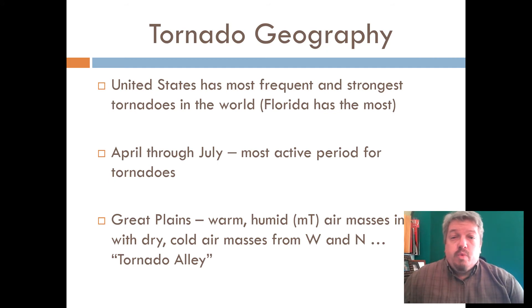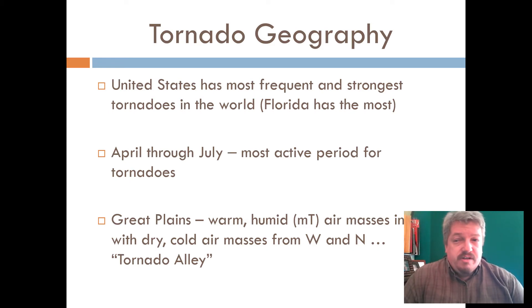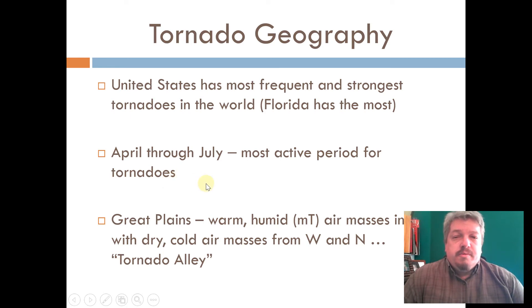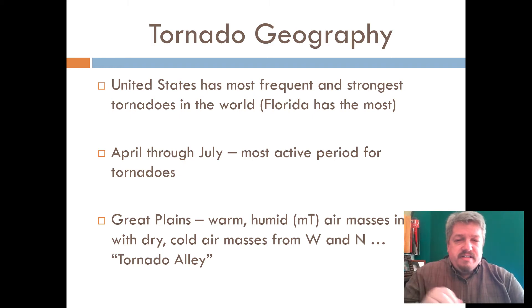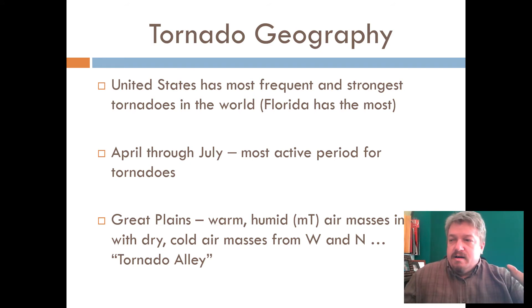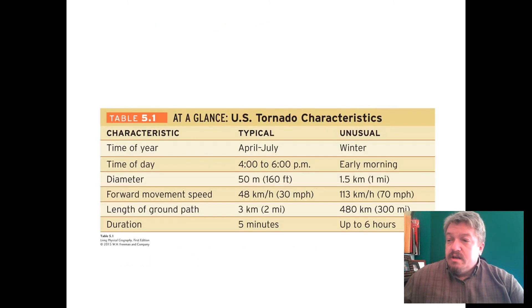The United States has the most tornadoes of anywhere in the world, with Florida having the most — largely due to hurricanes. It's not that other parts of the world don't have tornadoes; it's just that the U.S. has the right blend of geography and climate. Tornado and thunderstorm season is mainly spring and summer, April through July, on the Great Plains — Texas, Oklahoma, Kansas — that whole central area known as Tornado Alley, where the right types of air masses meet.